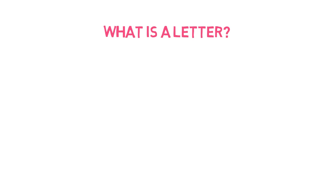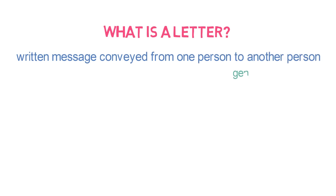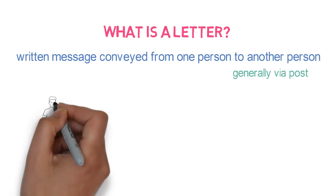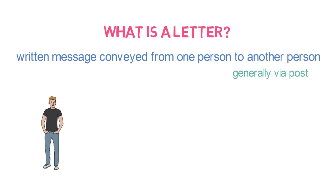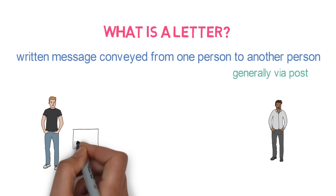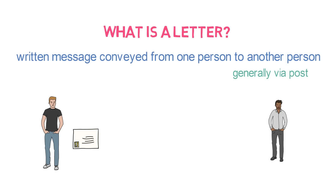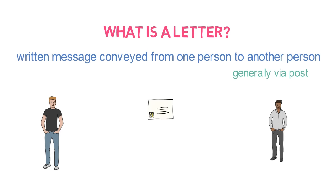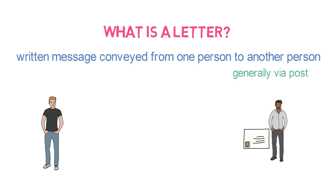What is a letter? A letter is a written message conveyed from one person to another, generally via post. For example, suppose there is a person who wants to provide certain important information to another person in written form. He will write the message on paper — this paper is called a letter. He will deliver this letter to a post office and provide the address of the receiver, and then the post office will deliver the letter to the receiver. So, the primary purpose of a letter is communication in written form.